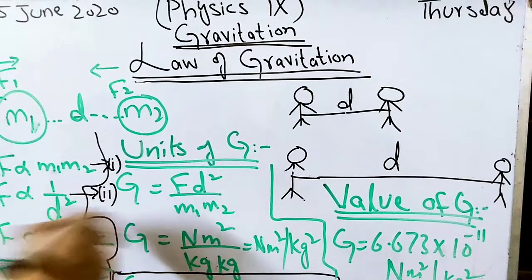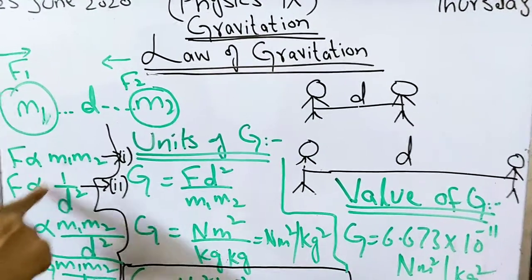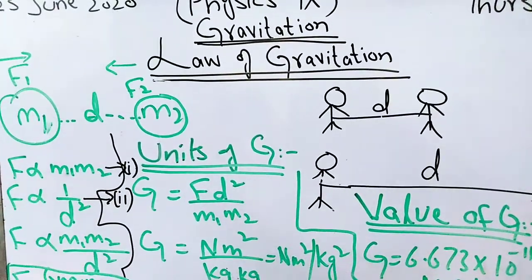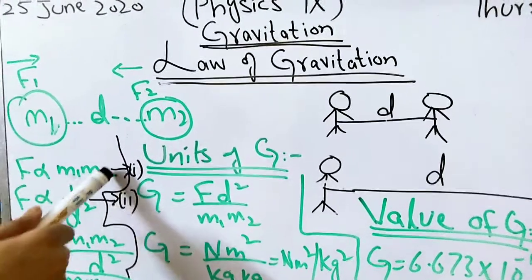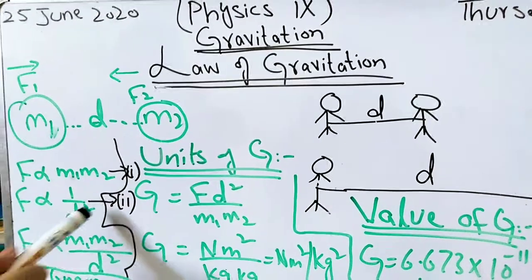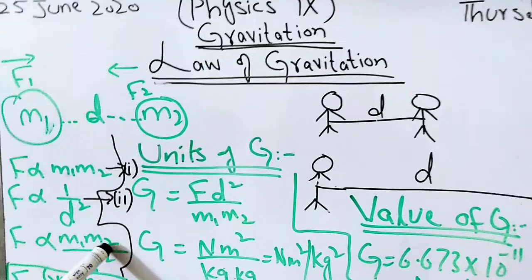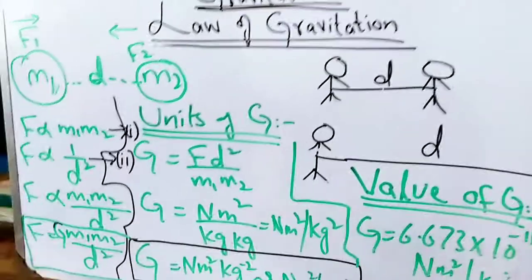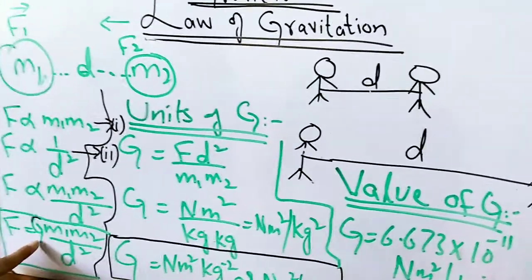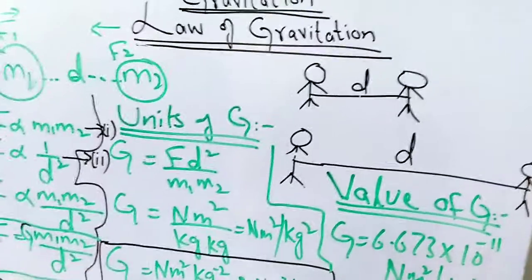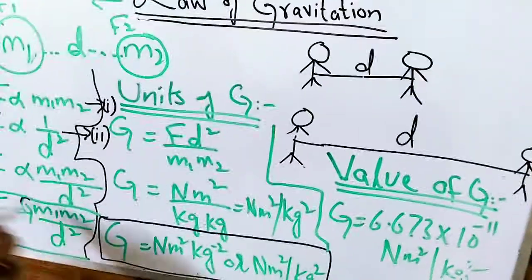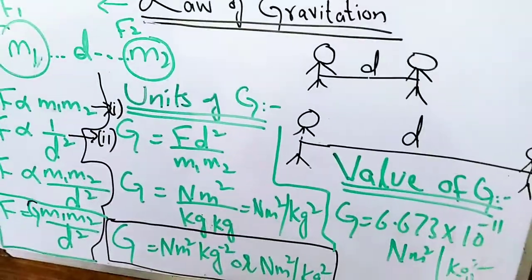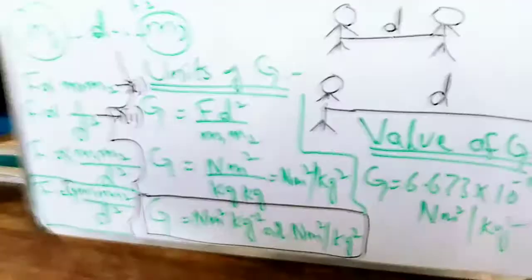Now we combine equation 1 and equation 2: F is proportional to M1 times M2 divided by D squared. We remove the proportionality sign and introduce G, the gravitational constant. So the law of gravitation formula is: F equals G times M1 times M2 divided by D squared.